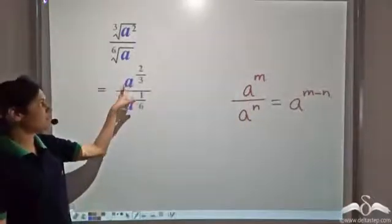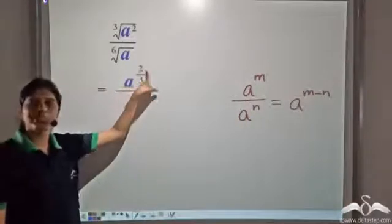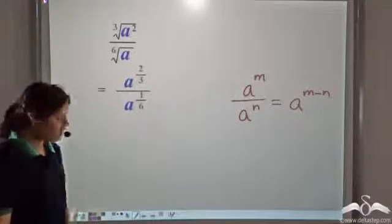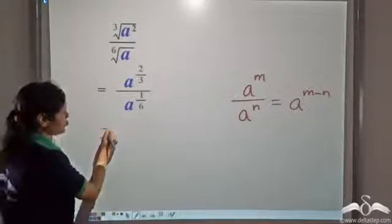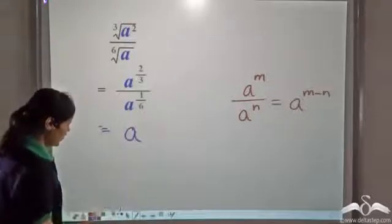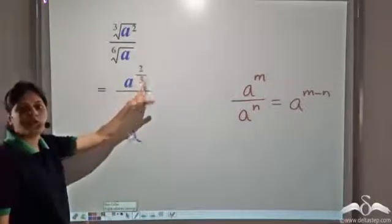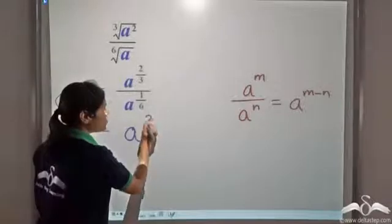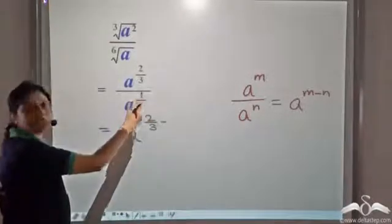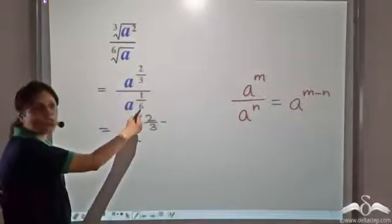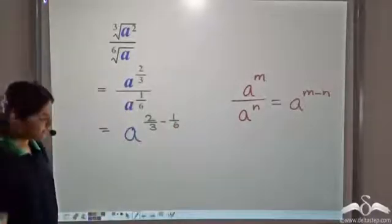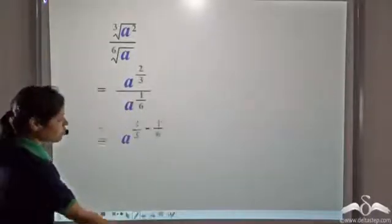So in this case we have a to the power something divided by a to the power something. So we can write it as a to the power — the exponent in the numerator which is 2 by 3, minus the exponent in the denominator which is 1 by 6. So this is what we have.